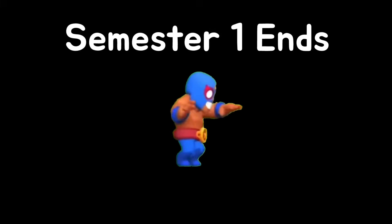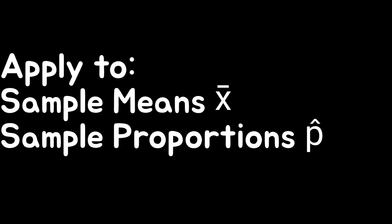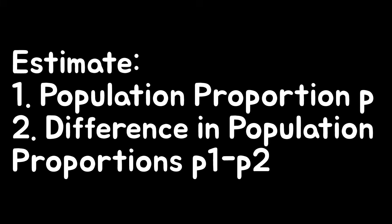Semester one ends and semester two begins. Chapter seven introduces sampling distributions, what they tell us, probability comes back, and then you apply that knowledge to sample means and sample proportions. Chapter eight introduces confidence intervals, and then you use them to estimate a population proportion or difference in two. State, plan, do, conclude becomes your friend this semester.